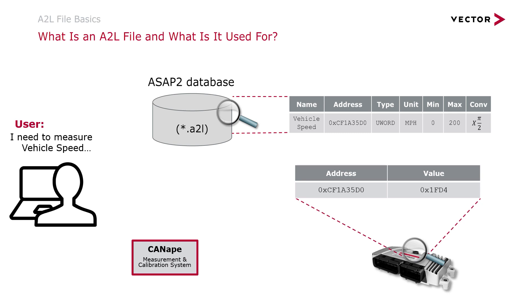An A2L file is an ECU description file needed for measurement and calibration of an ECU using the XCP protocol. It allows the user to access variables internal to the ECU by symbolic names.